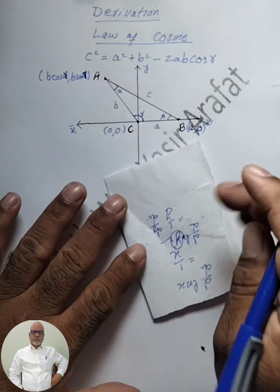Using the distance formula between A and B, with (x1, y1) = (b cos gamma, b sin gamma) and (x2, y2) = (a, 0), and noting that AB equals c: c equals the square root of (a minus b cos gamma) squared plus (0 minus b sin gamma) squared. Expanding, this gives a squared minus 2ab cos gamma plus b squared cos squared gamma plus b squared sin squared gamma.